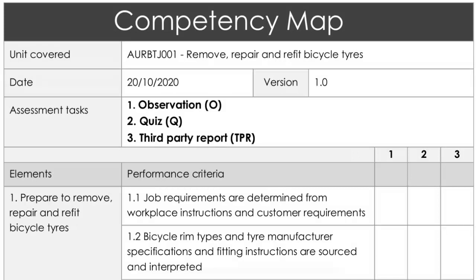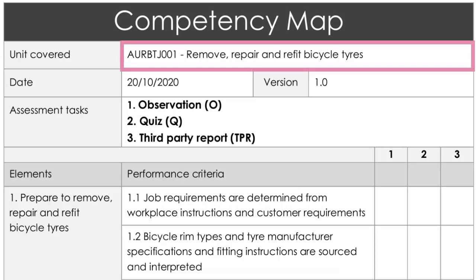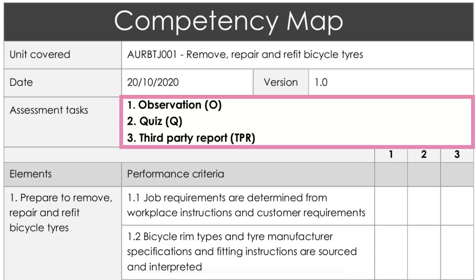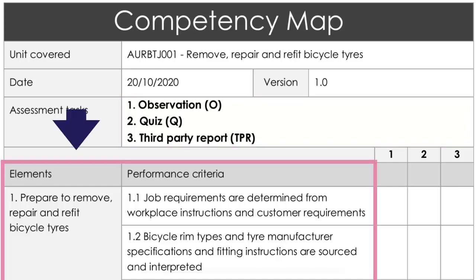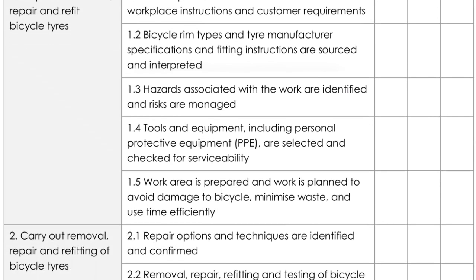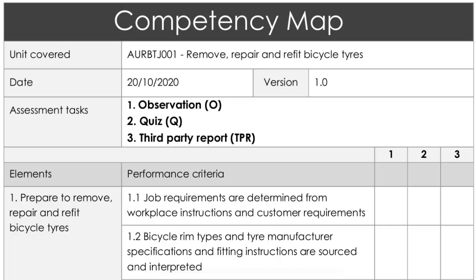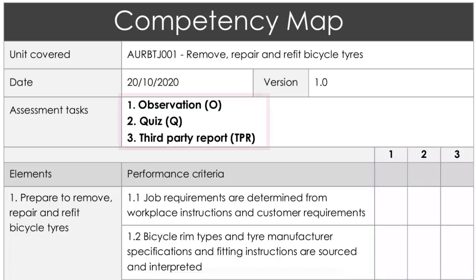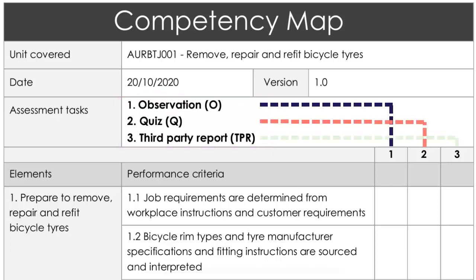In her mapping template, Nicole has identified the unit and listed the three assessment methods at the top. She's copied and pasted all the bits and pieces of the unit down the left-hand side, and these three numbered columns correspond with the three assessment methods listed. She has her observation checklist, her quiz, and third party report checklist at hand and ready to go. Nicole is now ready to map.